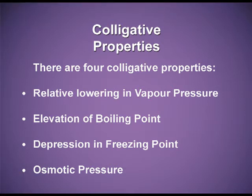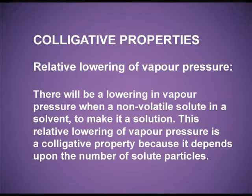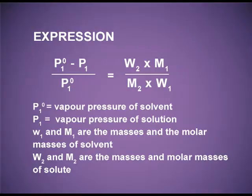The first colligative property is relative lowering of vapour pressure. Just now in the beginning I explained that there will be a lowering in vapour pressure when a non-volatile solute is mixed in a solvent to make it a solution. This relative lowering of vapour pressure is a colligative property because it depends upon the number of the solute particles. Mathematically, P⁰₁ minus P₁ upon P⁰₁ equals W₂ times M₁ divided by M₂ times W₁. Here P⁰₁ is the vapour pressure of the pure component 1, where 1 is the solvent.